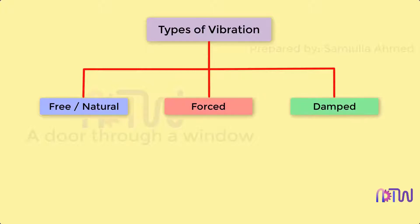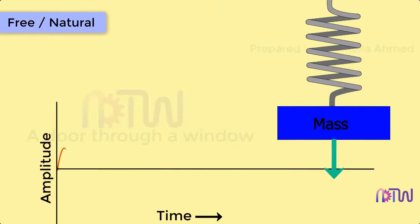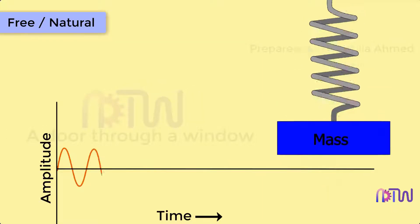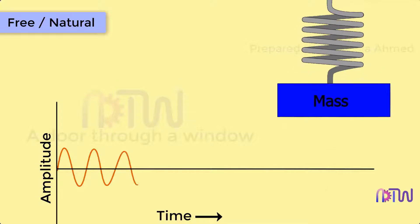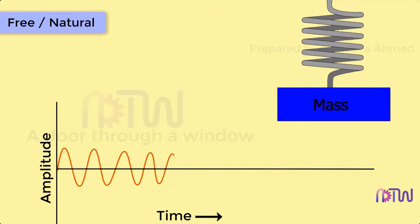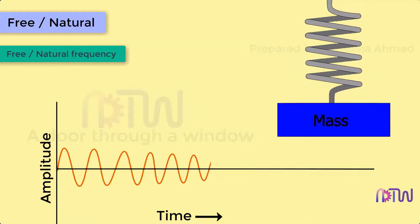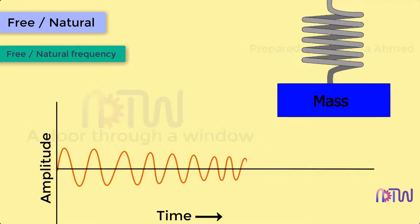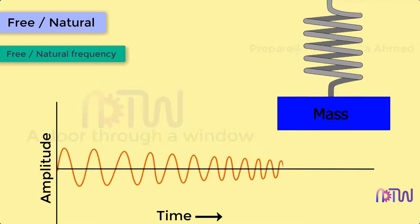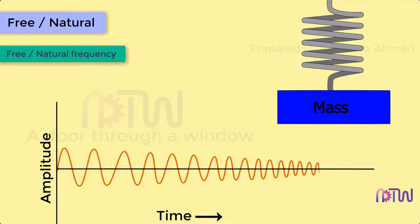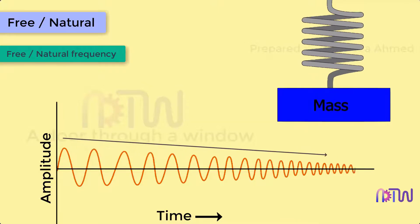Free or natural vibration is defined as when no external force acts on the body after giving it an initial displacement, then the body is said to be under free or natural vibration. The frequency of free or natural vibration is called free or natural frequency. It is observed that amplitude keeps on decreasing with respect to time.